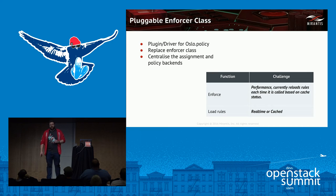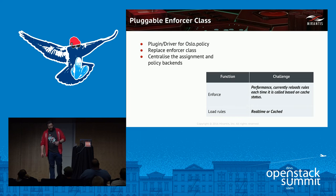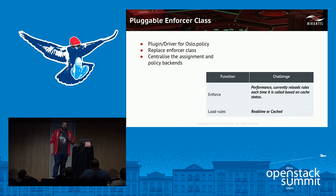We need to be able to centralize the assignments and policy backends. The current situation where we're coding roles in one place that have no relation to policies assigned in another place — we need to fix that and pull those closer together. What we need to be aware of when doing this is performance. This mechanism needs to be fast. The loading of rules — we need to make a decision about whether they're real-time rules or cached, and that comes back to affecting performance.